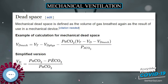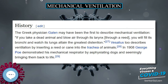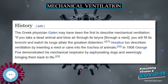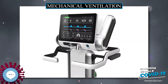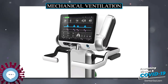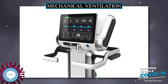Mechanical ventilation can be used as a short-term measure, for example during an operation or critical illness, often in the setting of an intensive care unit. It may be used at home or in a nursing or rehabilitation institution if patients have chronic illnesses that require long-term ventilatory assistance. Due to the anatomy of the human pharynx, larynx, and esophagus, additional measures are often required to secure the airway during positive pressure ventilation. The common method is by insertion of a tube into the trachea, intubation, which provides a clear route for the air.